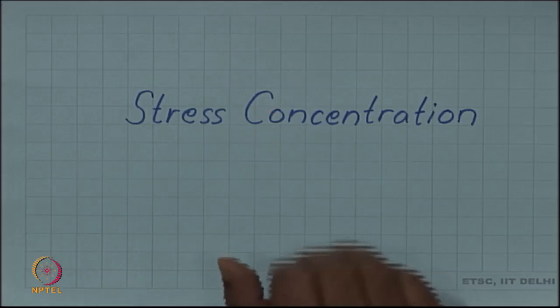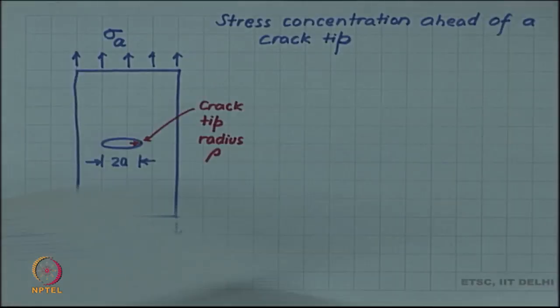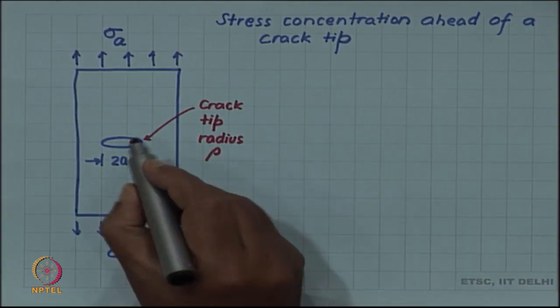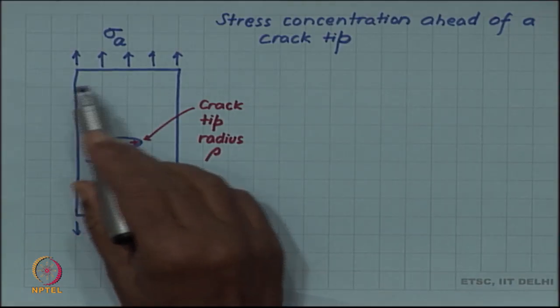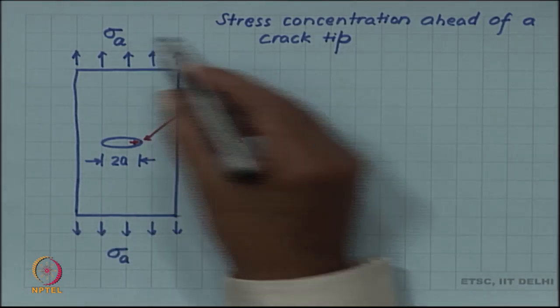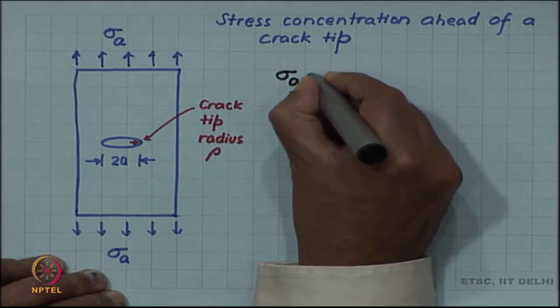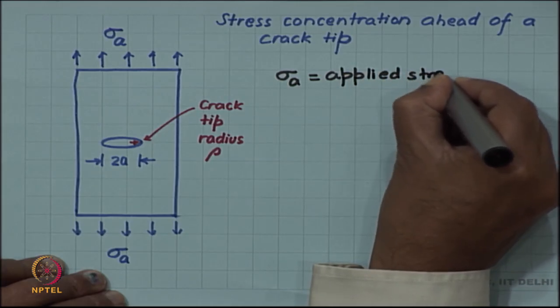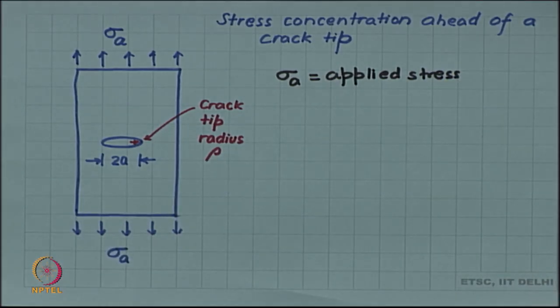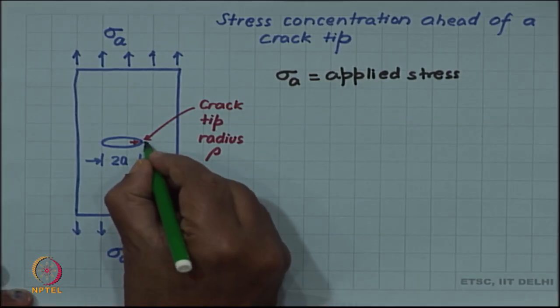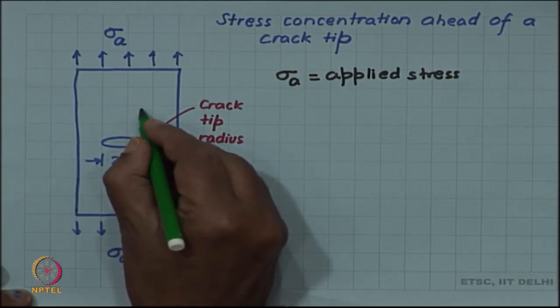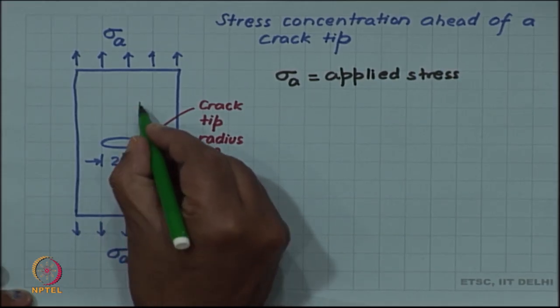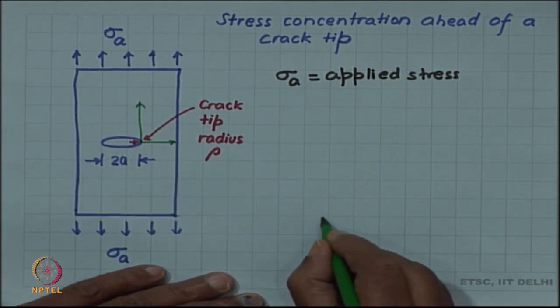An important aspect of the role of cracks in the fracture of materials is the stress concentration caused by them. By stress concentration we mean the stress ahead at the crack tip. This is a crack in a body under an applied stress of sigma A. If we look at the stress along the line starting from the crack tip and going away from that, and plot the stress on the y-axis, let us do that.